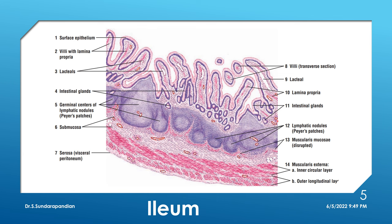Mucosa consists of epithelium, lamina propria, and muscularis mucosa. The submucosa has routine contents — lymphocytes, blood vessels, and Meissner's plexus. The muscularis externa has inner circular and outer longitudinal muscle coat with myenteric nerve plexus in between. The ileum is completely lined by peritoneum, so the outer lining is serosa with mesothelium. In the lining epithelium, columnar epithelium with goblet cells is present, but with a small number of goblet cells.